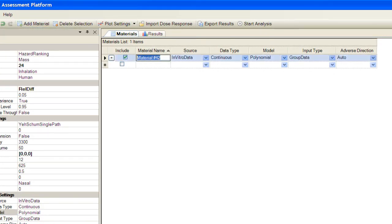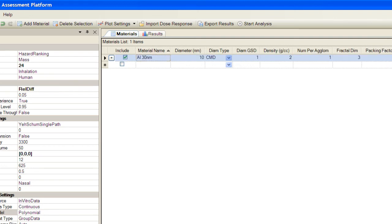We'll change the name of the material as used in the list. In this case, our first material is a 30 nanometer aluminum particle. So I'll call the material AL30NM. In the Physical Properties window, I'll set the diameter of the particle to 30 nanometers. In this case, the particle density is 2.7 grams per cc.